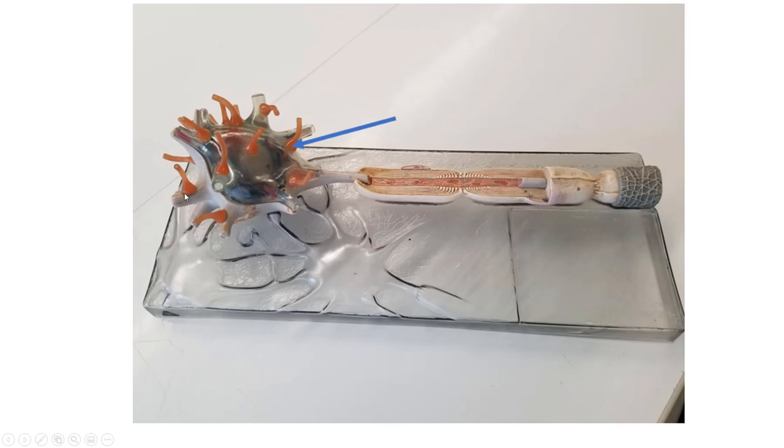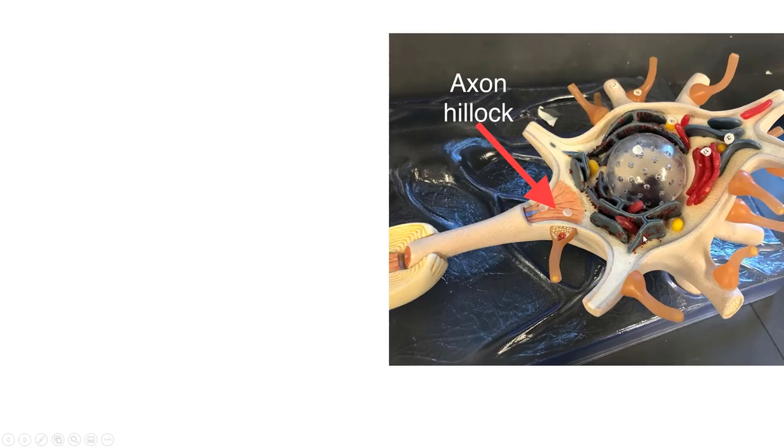You have synaptic knobs at the end of the axon terminals. So, synaptic knob, then you have the small space which would be a synapse, and then your dendrite. These are all axon terminals coming in from other axons that are going to either stimulate or inhibit this neuron.